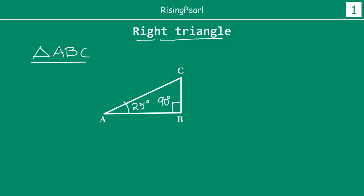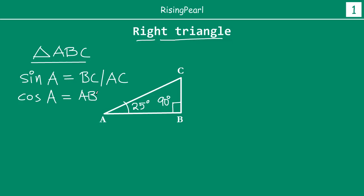From the last webisode, we learned about the trigonometric ratios. So sine of angle A is BC divided by AC — the side opposite to angle A divided by the hypotenuse. Similarly, cos of angle A is the adjacent side AB divided by the hypotenuse AC, and tan A equals BC divided by AB.